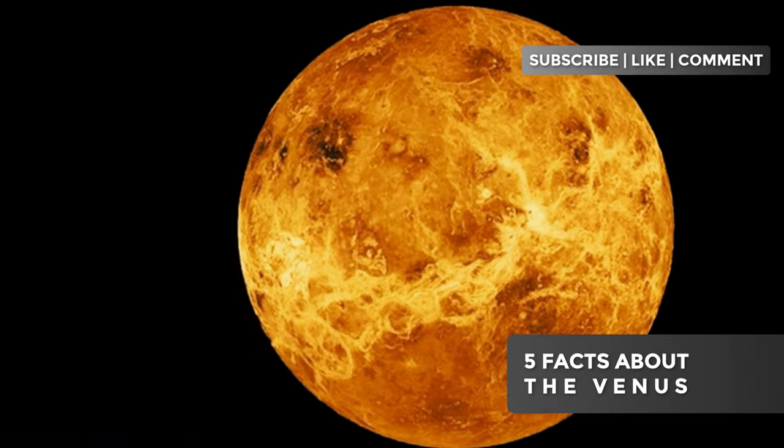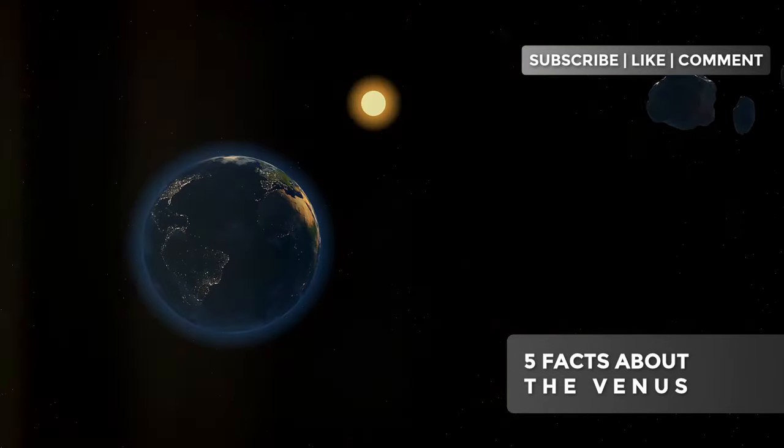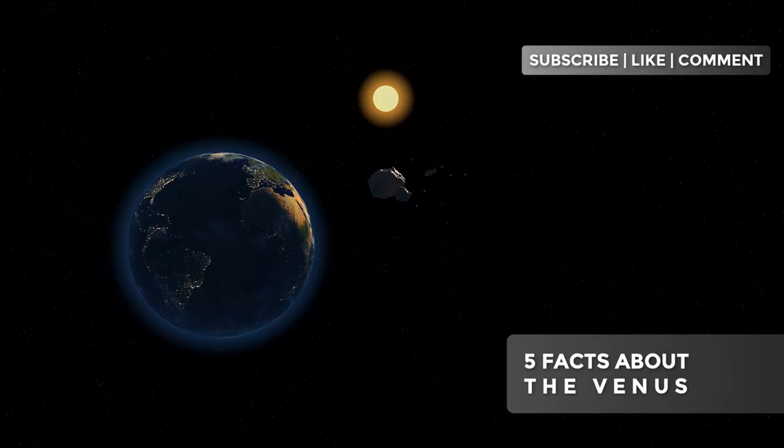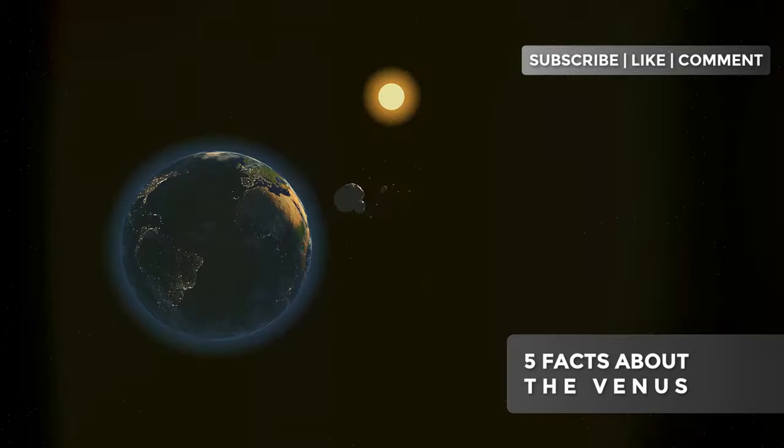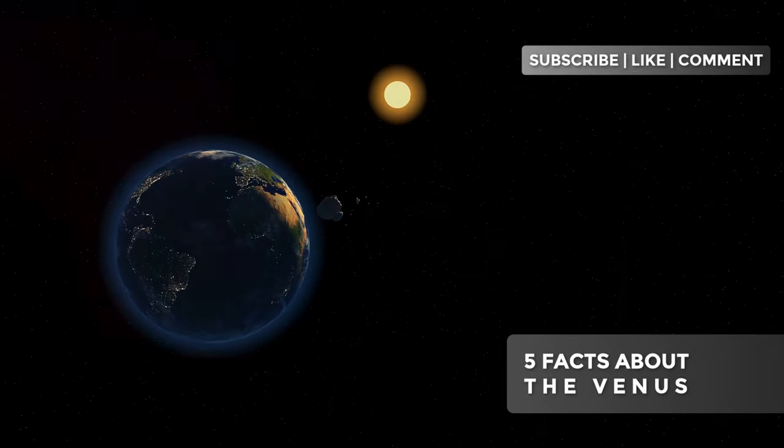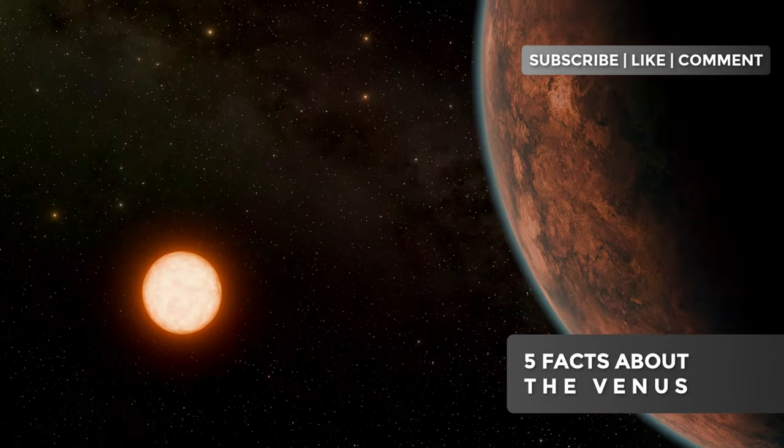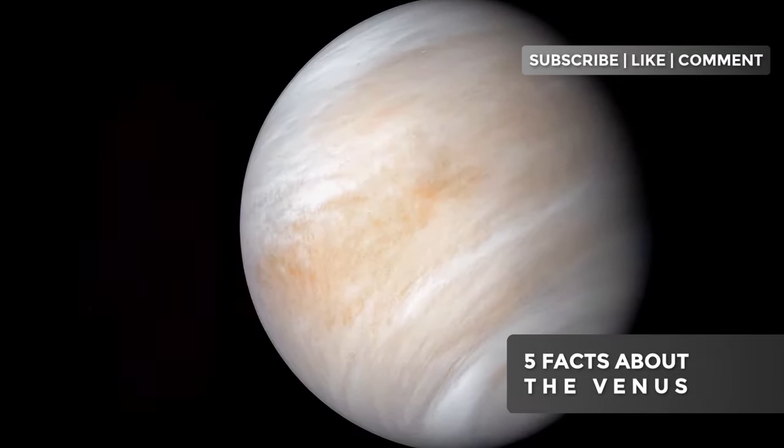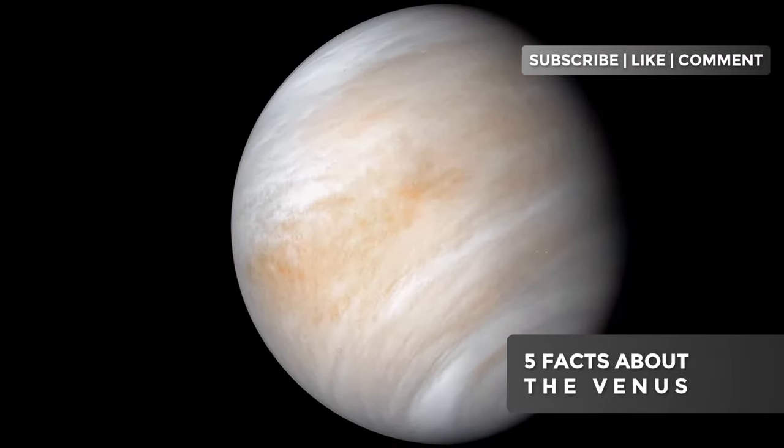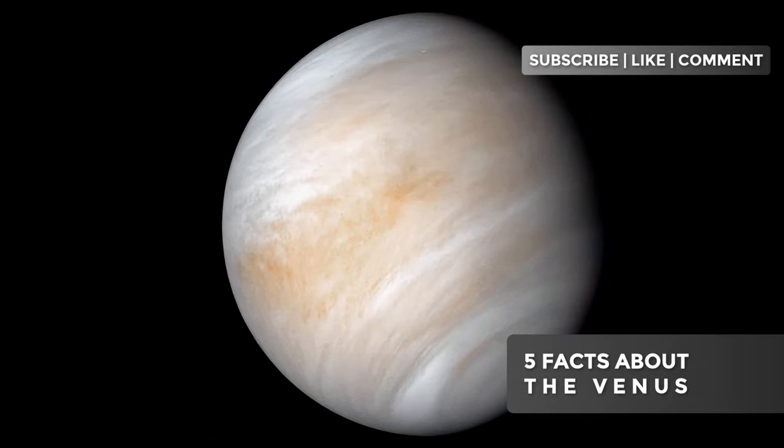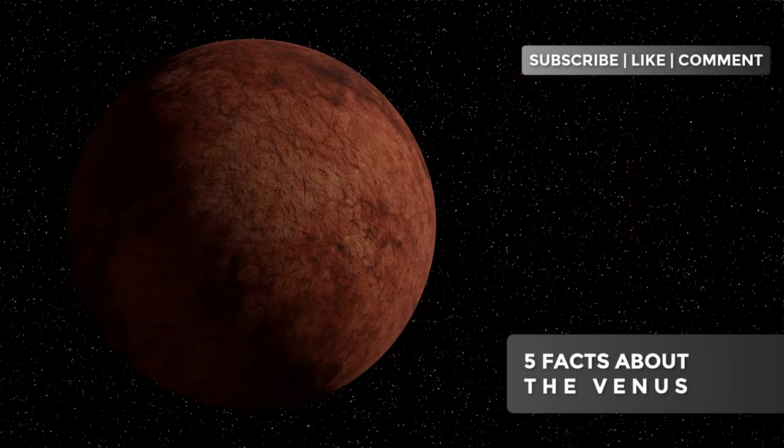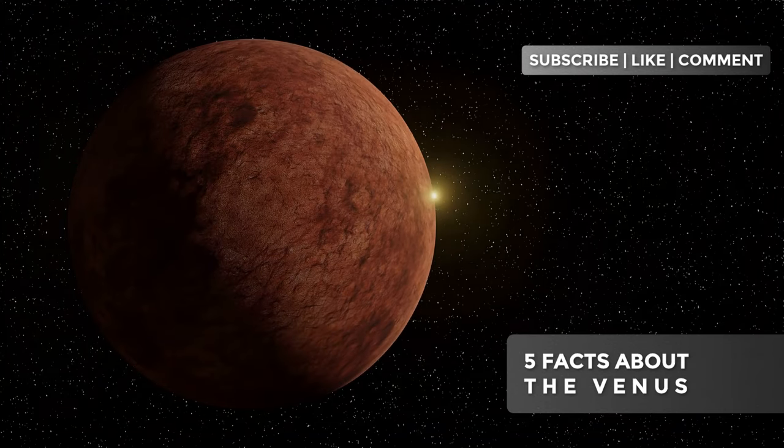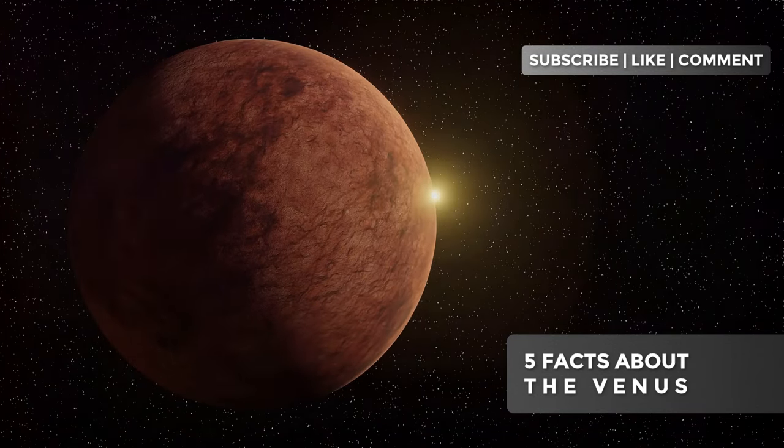lasts a whopping 243 Earth days. In contrast, a Venusian year, which is the time the planet takes to orbit once around the Sun, lasts only 225 Earth days. This means that on Venus, the Sun rises in the west and sets in the east, a unique phenomenon in our solar system among planets that rotate on their own, excluding Uranus, which has an extreme tilt. Even more mind-blowing, a hypothetical inhabitant of Venus would see only two sunrises during a complete Venusian year.